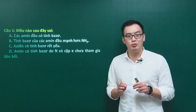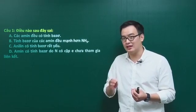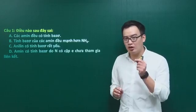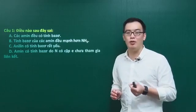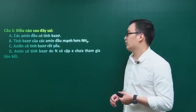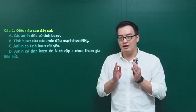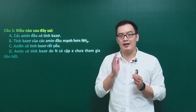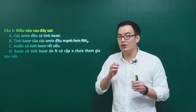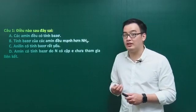Tuy nhiên tính bazơ của các amine không giống nhau - có loại bazơ mạnh hơn và có loại yếu hơn. Tất cả amine đều là bazơ yếu, nhưng có loại amine tính bazơ cực kỳ yếu, yếu đến nỗi không thể đổi màu quỳ tím được - đó chính là một số amine thơm, điển hình là aniline. Vậy nhận định B - tính bazơ của các amine đều mạnh hơn ammoniac - là không đúng. Đó chính là đáp án sai.